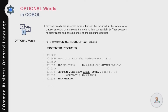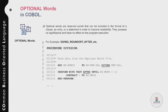Looking at the example in the Procedure Division, we have 'ADD BONUS TO EMPLOYEE-SALARY GIVING EMP-SAL.' Here GIVING is an optional word — you could also write this statement using the COMPUTE statement. Similarly, in the PERFORM statement, AFTER is an optional keyword. These optional keywords are used to improve the readability of the code and have no effect on program execution.